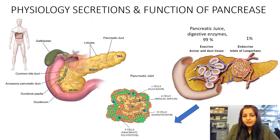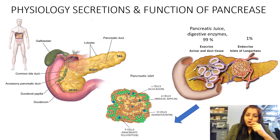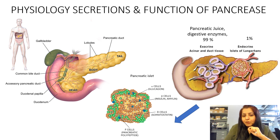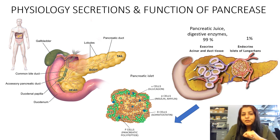There are 4 to 5 types of cells in the islets of Langerhans: D cells, alpha cells, and beta cells. Alpha cells release glucagon, beta cells release insulin, and D cells release somatostatin. All these hormones maintain blood glucose levels, with insulin being the main hormone primarily responsible for regulating glucose concentration in the blood.